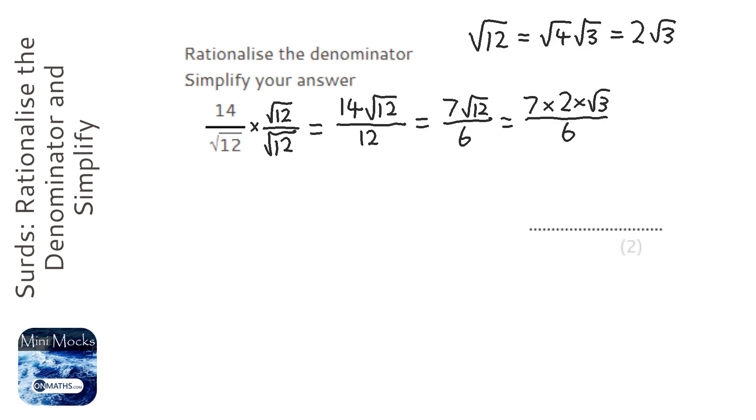Now what I can do is divide top and bottom by 2, and I get 7√3 over 3.